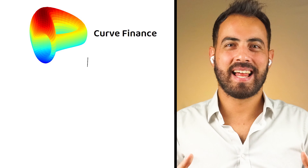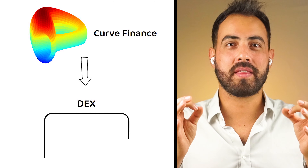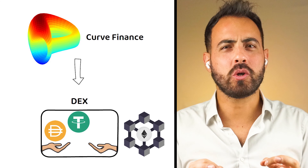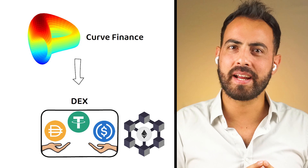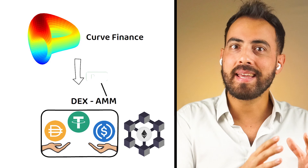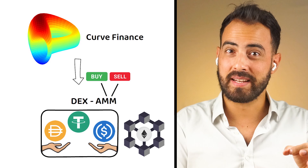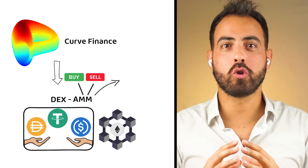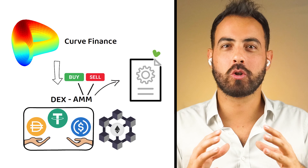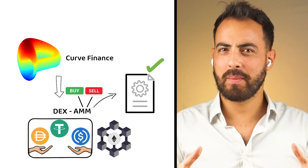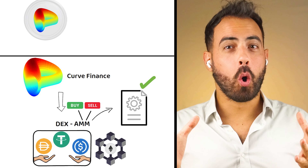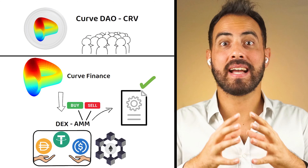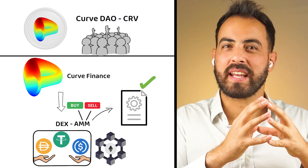Curve Finance is a decentralized exchange, or DEX, on the Ethereum blockchain designed for trading stablecoins. It uses an automated market maker, or AMM, to handle its buy and sell orders. Running this application is the Curve DAO token, also known by the market ticker CRV, which is an ERC20 governance token for the Curve network.